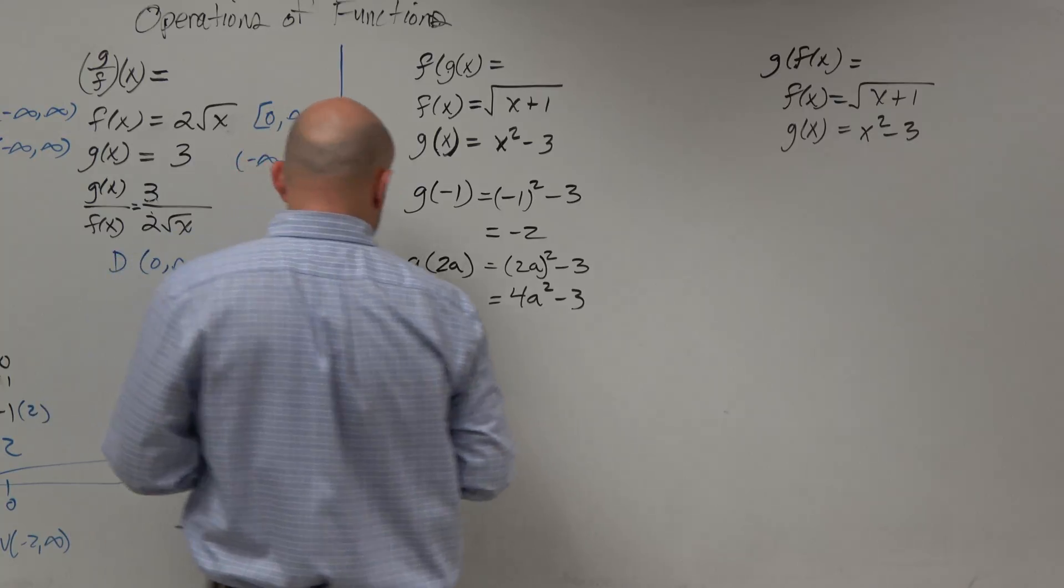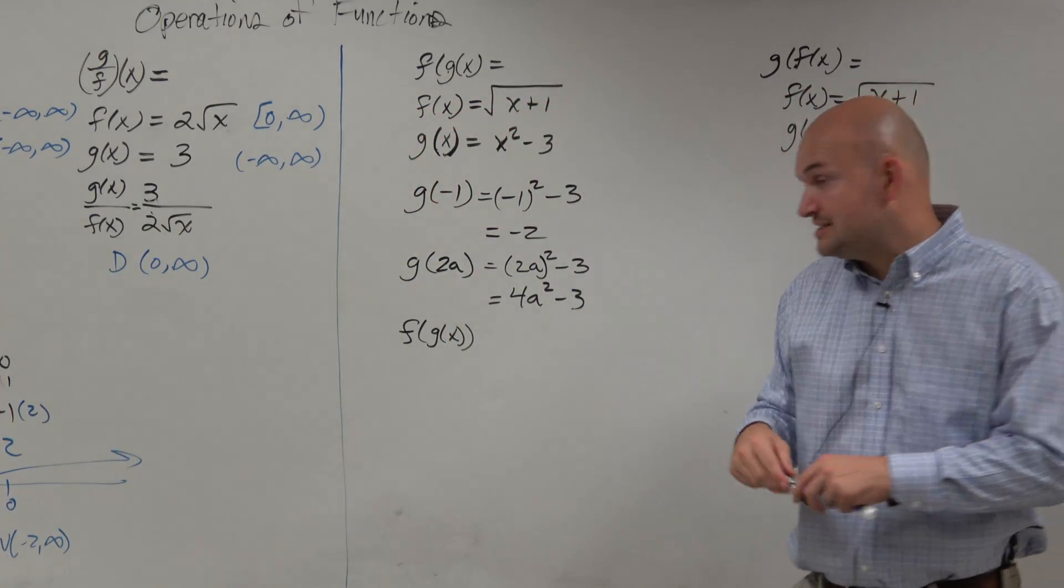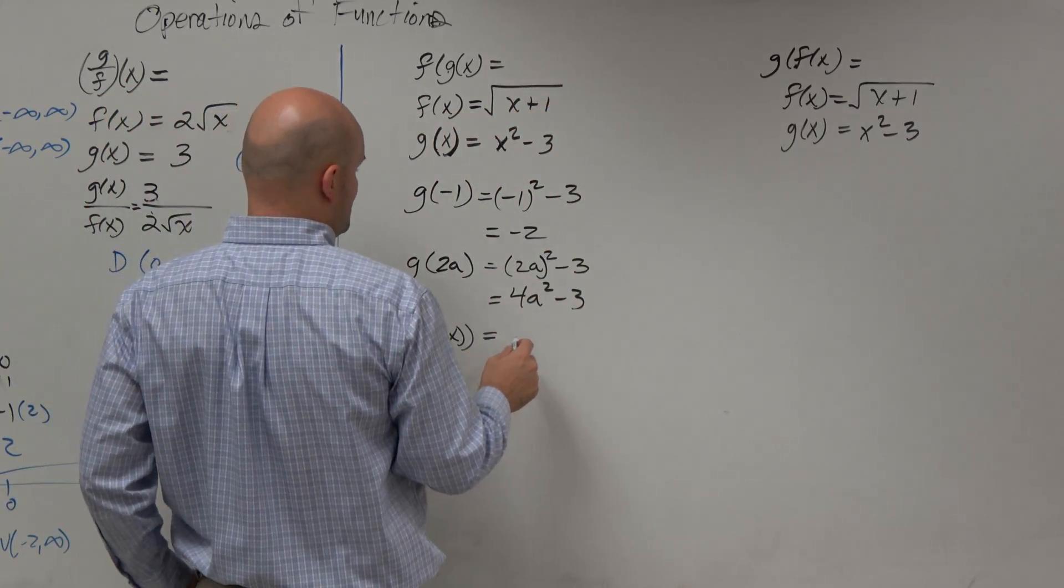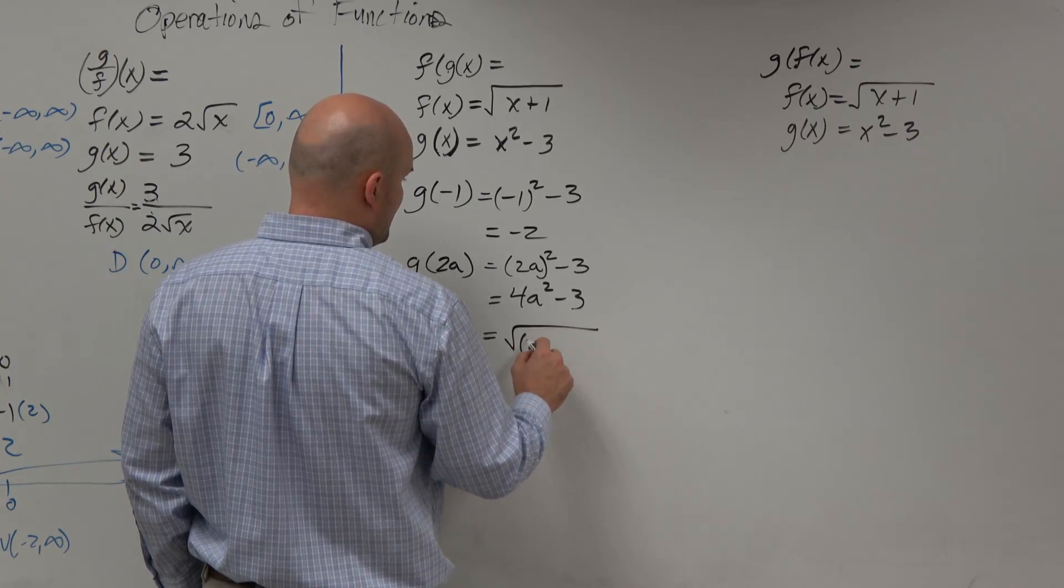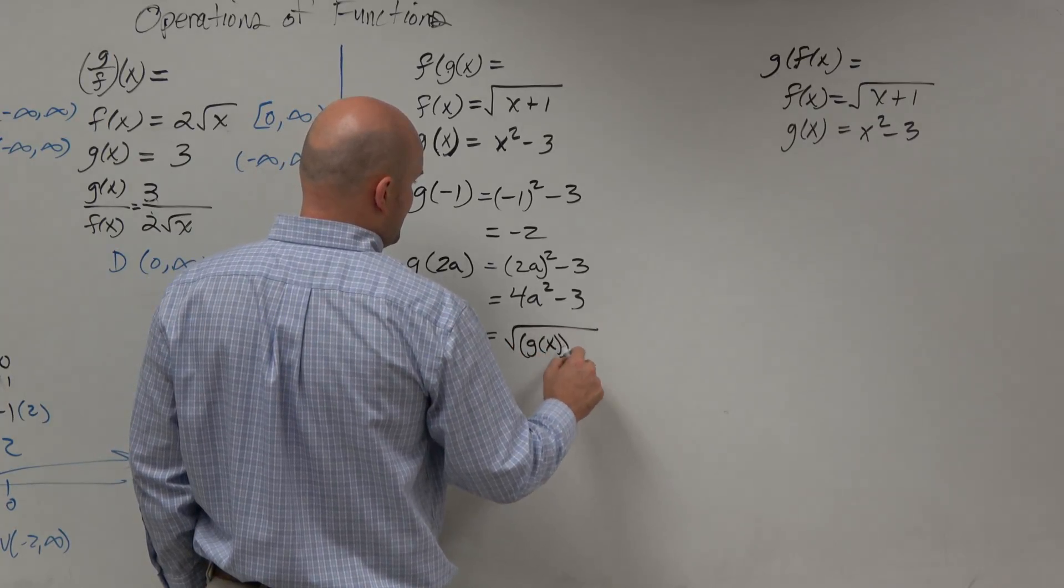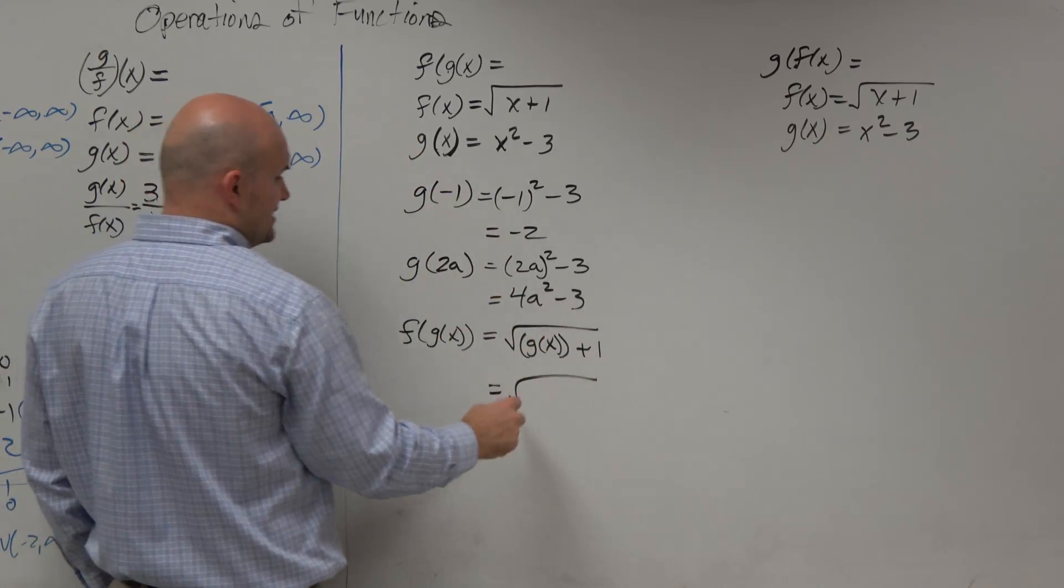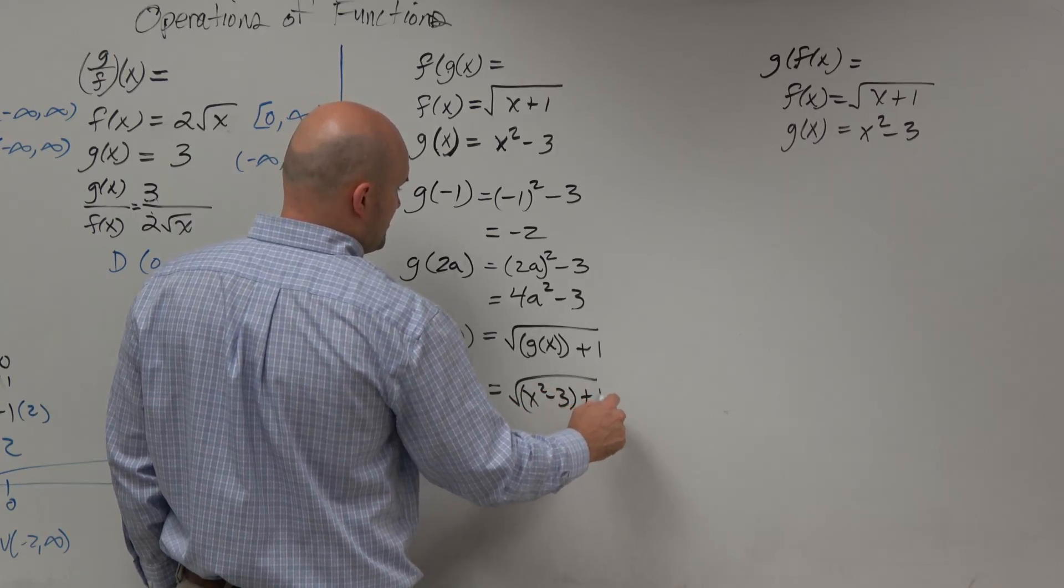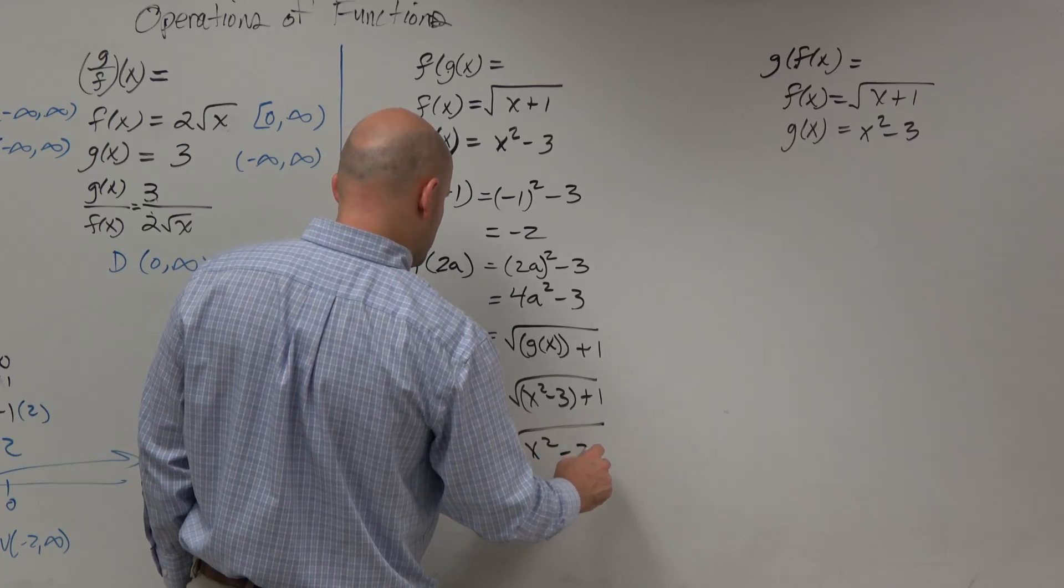So if I want to do f of g of x, then basically what I'm doing there is I'm just going to take my g of x function and plug it into my f, kind of unlike this one. So I'll take g of x, which is square root of g of x, sorry, plus 1. So therefore, g of x here is x squared minus 3 plus 1, which I can simplify to x squared minus 2.